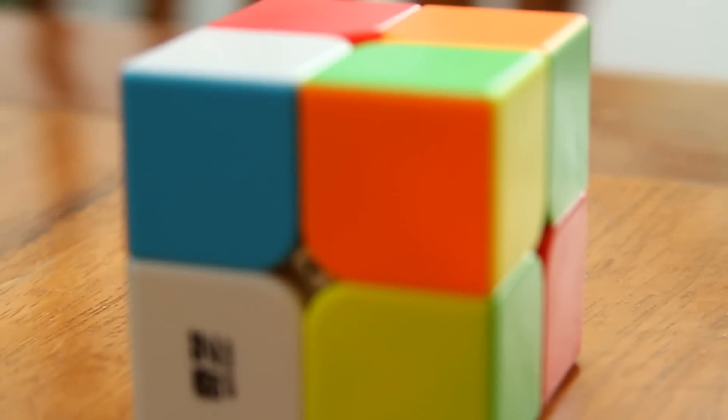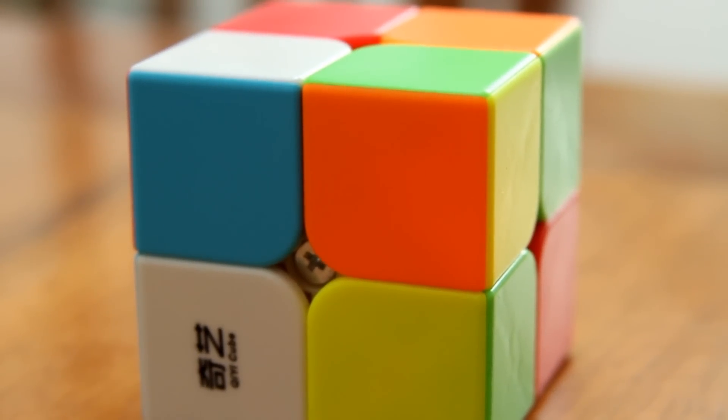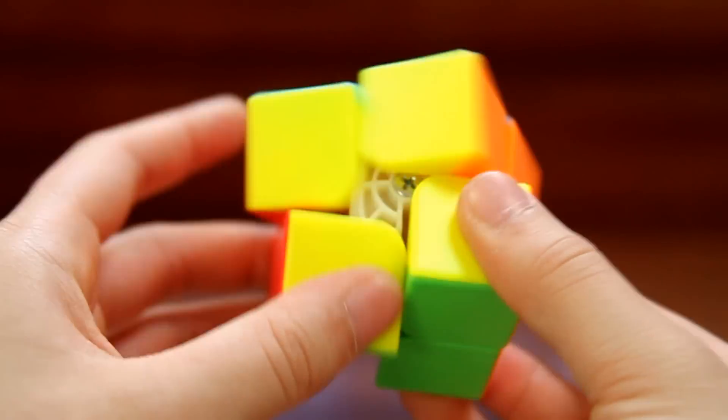Starting off with 2x2, we have the QiYi ChiDi. Now, this cube really surprised me when I first got it. Out of the box, it's pretty much good to go, but with a little bit of setting up, it has better corner cutting.